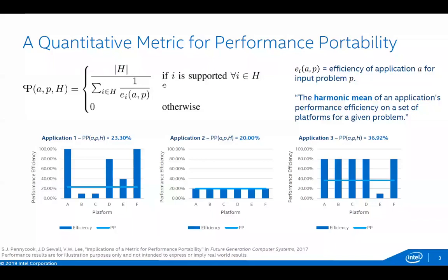Three example graphs illustrate how the metric works with dummy data. For application one, performance efficiency varies quite a lot across platforms, and the harmonic mean tracks the minimum — platforms B and C — giving about 23%. For application two, where all performance efficiencies are equal across all platforms, the score is exactly 20%. Compared to application one, most developers would prefer application one, accepting slightly decreased efficiency on platforms B and C as a tradeoff for higher efficiency on the other four platforms.